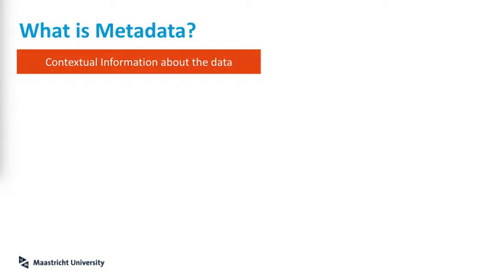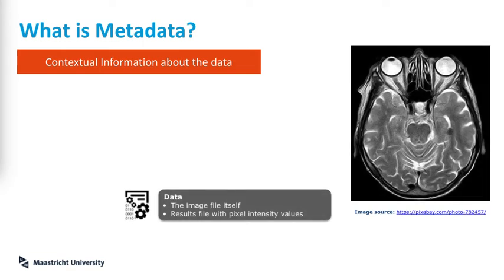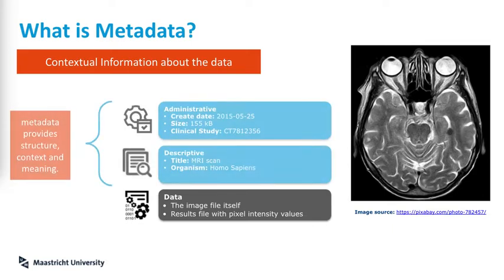So, what is metadata? Simply put, it is the contextual information about the data. Like in this example, the fMRI image is the data itself, but the metadata is the image creation date, the clinical study number, the title of the image, etc. The metadata provides structure, context, and meaning to the data.